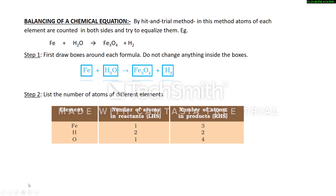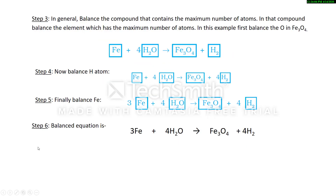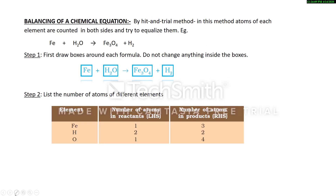I think you have understood whatever we discussed in the previous videos about chemical reaction, chemical equation, and balanced chemical equation. Now we will discuss how we can balance a chemical reaction. We use the method known as the hit and trial method, in which we try to balance the atoms of each element on both sides — first we count them and then we try to equalize them.